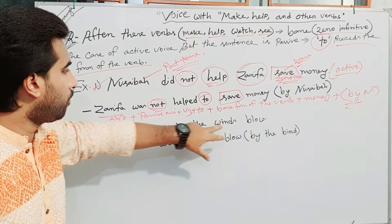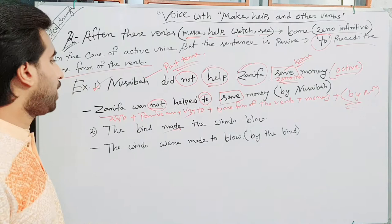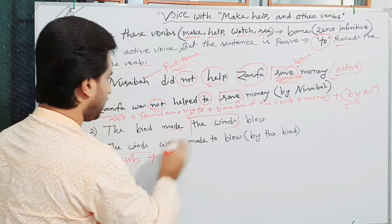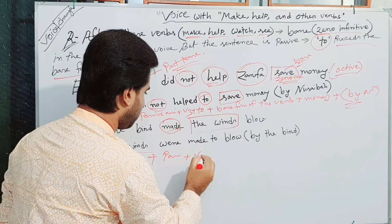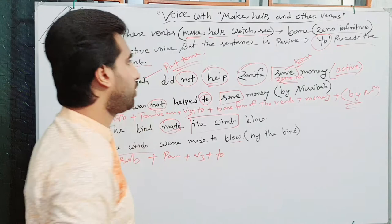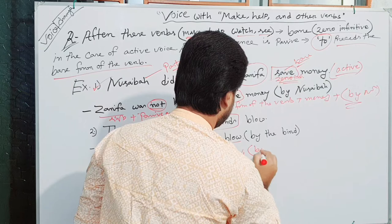Look at the next example: The bird made the winds blow. In the case of passive, 'winds' becomes the subject, as 'winds' is a plural form, we need a plural auxiliary verb. Here is the passive auxiliary, plus 'made' in V3 form, plus — as we need in the passive sense — 'to'. Here is 'to', which precedes the zero-infinitive. Plus V1 or zero-infinitive or base form of the verb.